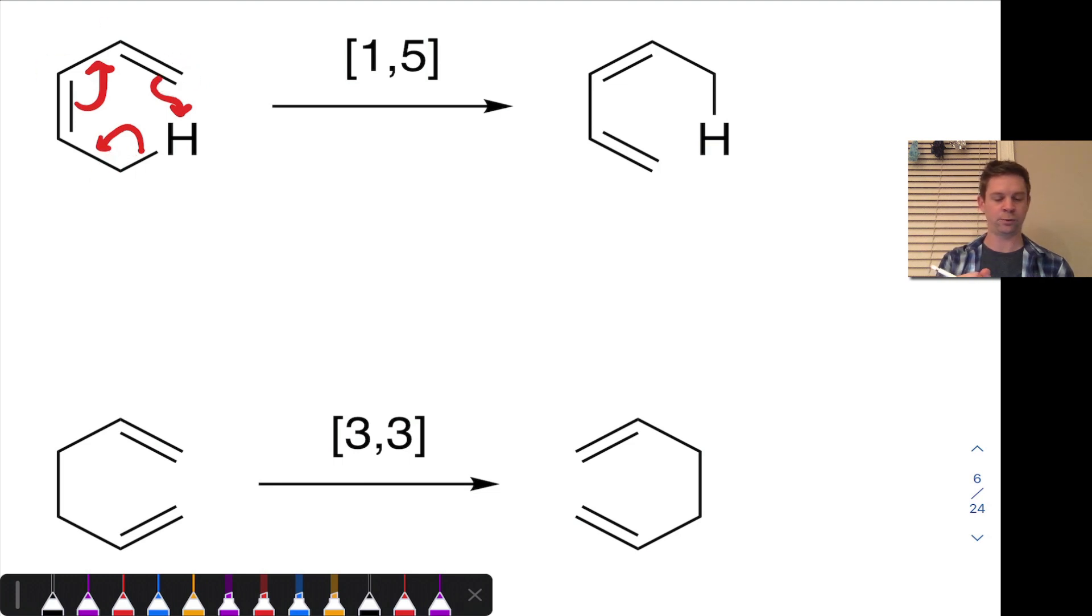On the other hand, the hydrogen side hasn't moved at all, right? Hydrogen has sort of just sat still, just come along for the ride with those migrating electrons. And so there's our 5-atom pi system, quote-unquote, from carbon 1 all the way around to carbon 5, and that's where the 5 in this name comes from. The 1 comes from the fact that the other side of the bond doesn't really migrate anywhere. It just sits attached to hydrogen the entire time. So this is a 1, 5 rearrangement.